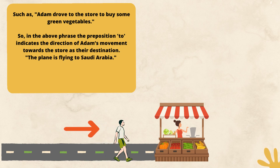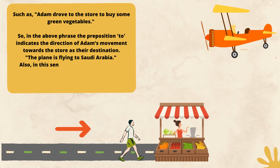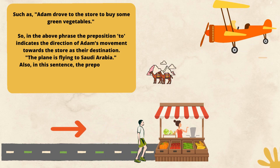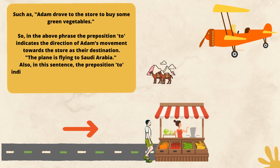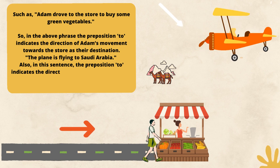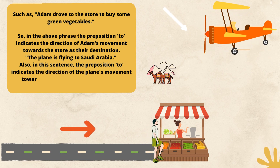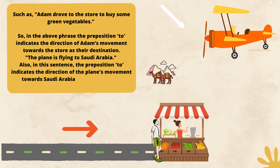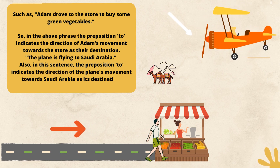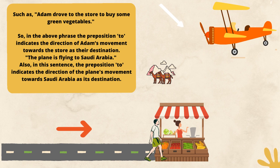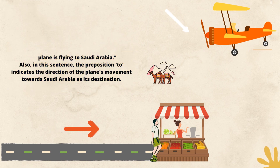The plane is flying to Saudi Arabia. Also, in this sentence, the preposition 'to' indicates the direction of the plane's movement towards Saudi Arabia as its destination.